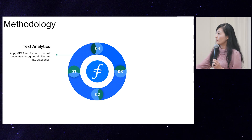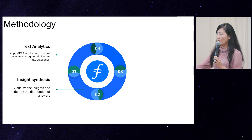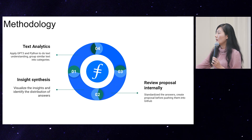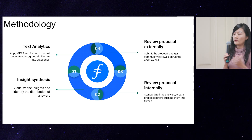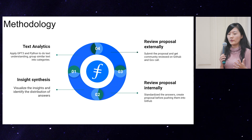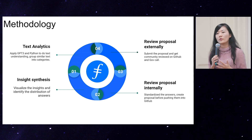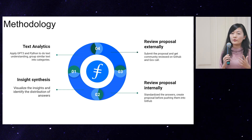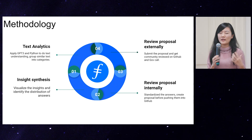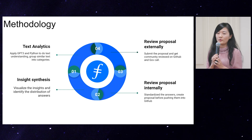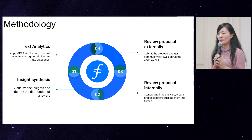Double-clicking on the methodology: text analytics, then insight generation and internal proposal review. What's even better about Web3 projects in general is that you also need to review your proposal externally. GitHub is an open forum, so all those new proposals will be reviewed by the GitHub community and your broader community as well. This is a part that is kind of missing in the traditional industry. We really leverage community help and offer transparency to the community.